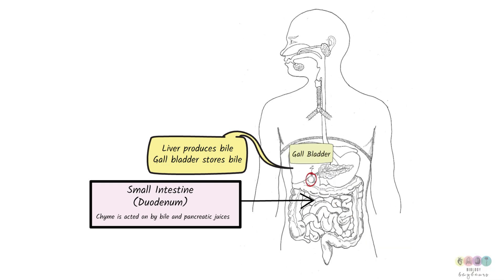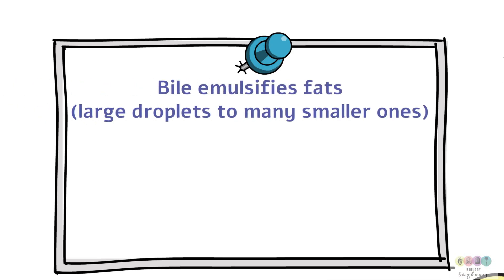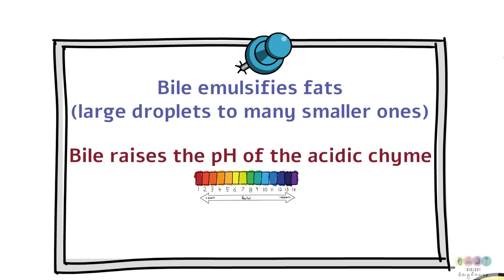Bile is produced by the liver and stored in the gallbladder. Bile emulsifies fats. Turns large droplets of fats into many smaller ones. Bile raises the pH of the acidic chyme. Bile contains salts. No enzymes.